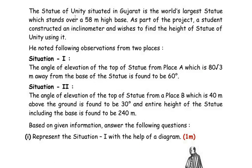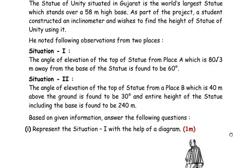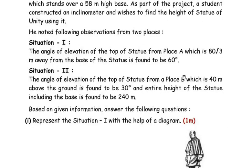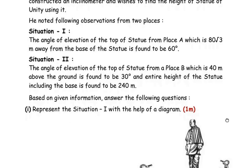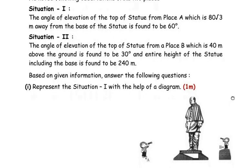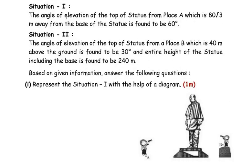The Statue of Unity, situated in Gujarat, is the world's largest statue which stands over a 58-meter-high base. As part of the project, a student constructed an inclinometer and wishes to find the height of the Statue of Unity using it. He noted the following observations from two places. Situation 1: The angle of elevation of the top of the statue from place A, which is 80√3 meters away from the base of the statue, is found to be 60 degrees.